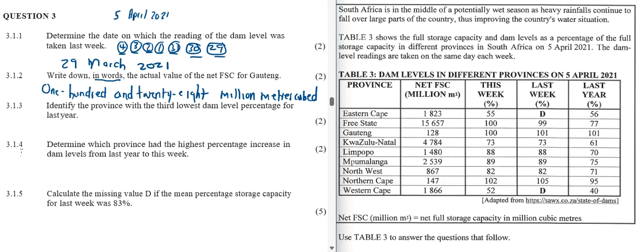Let's move on to the next question. 3.1.3: identify the province with the 3rd lowest dam level percentage for last year. So we're using the last column. The Western Cape is the lowest with 40%, the Eastern Cape is the 2nd lowest with 56%, and the 3rd lowest would be KZN with 61%.